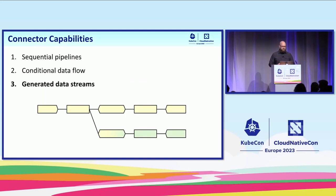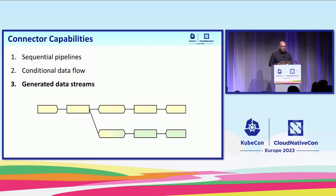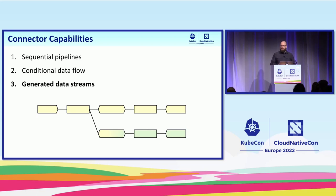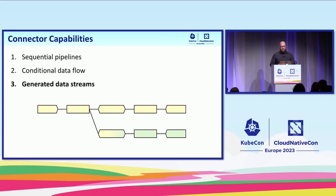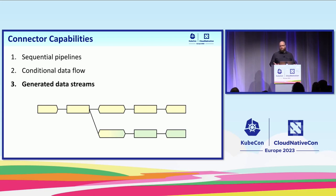So we can generate data streams. This blurs the line between processing and managing data streams a bit, but there's an important aspect of the management here: we're generating a new data stream. With the connectors framework, users have full control over this. They can put the connector in whichever pipeline they want to receive the data. If they wanted to preserve the original data stream, they can replicate it. And if you want to mix them back together, you can merge those data streams. So you have whatever options you need.